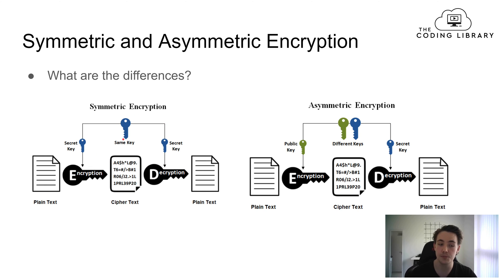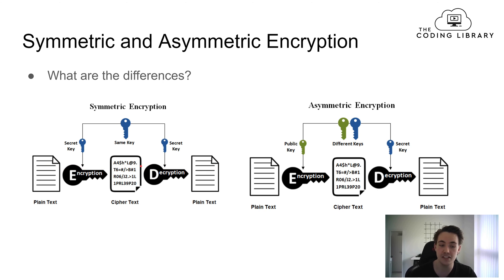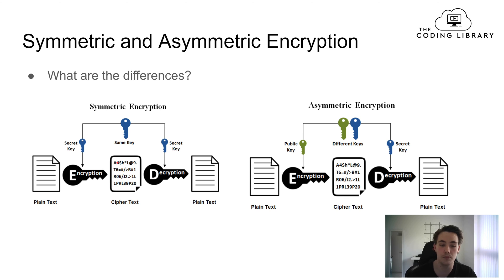In symmetric encryption we have the same key for both the sender and the receiver. We have the plain text that we want to encrypt so it can be safely sent on the internet. When we're communicating with another client or server we want to encrypt what we're sending, because if a hacker gets that information — especially personal or credit card information — that could be really crucial and damaging.